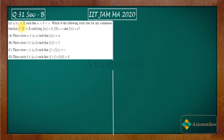Let A, B, C belong to R such that A is less than B, and B is less than C. The question asks: which of the following is true for any continuous function F from R to R satisfying this condition? Among these four options, which will be true for every continuous function on R?